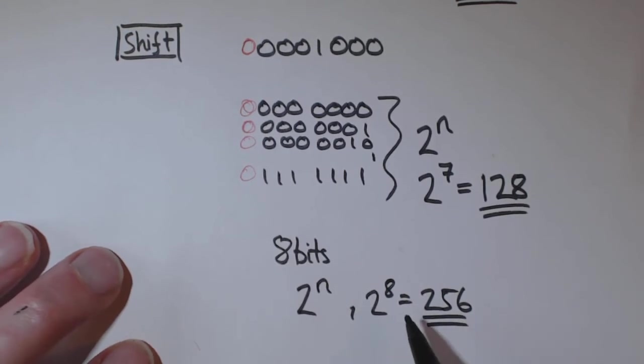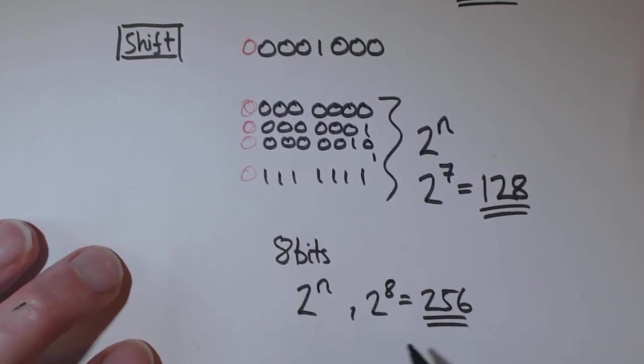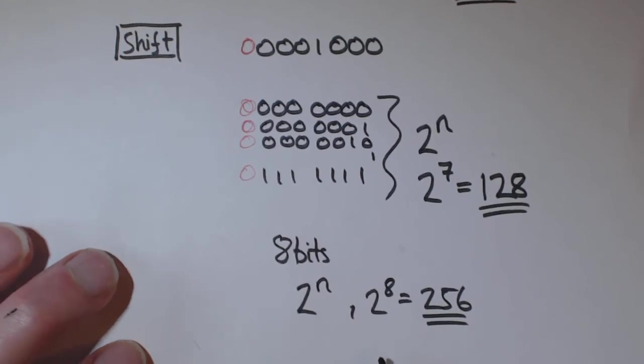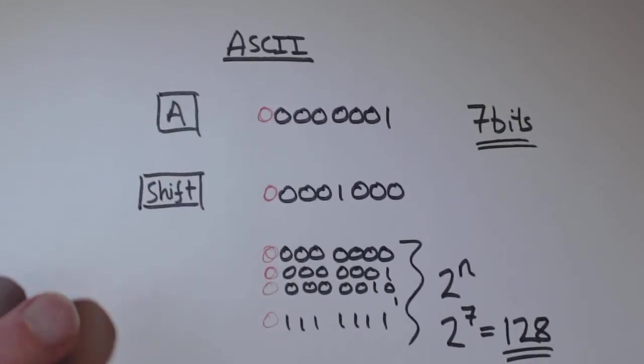And this is when we look at graphics. This is why something called GIF. Each pixel uses 8 bits to save it. And that's why with a GIF image, you can only have 256 different colours. So that's ASCII.